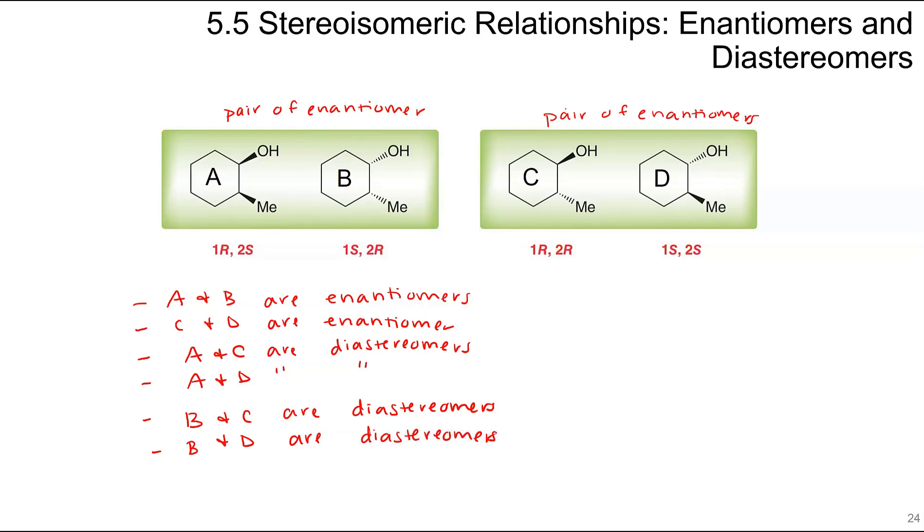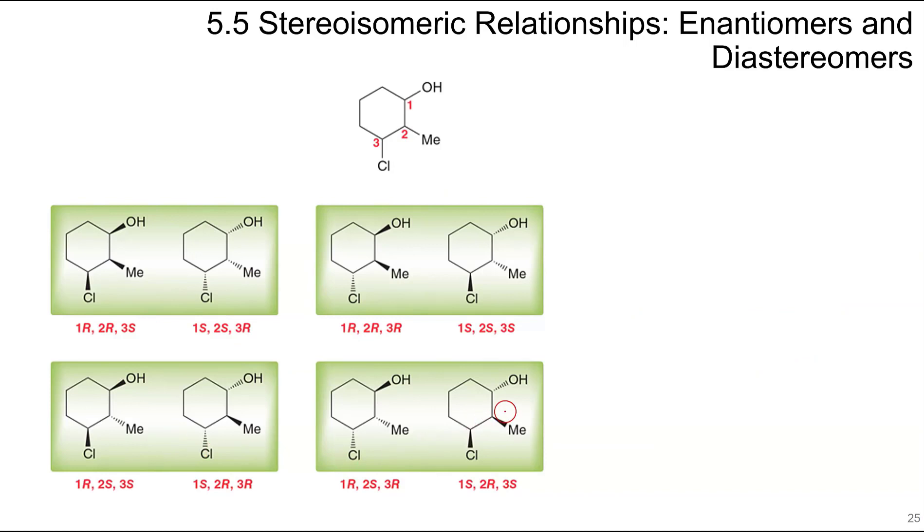For a compound with two chiral centers, we can have 2 to the N, or 2 squared equals 4 possible stereoisomers. The formula for the max number of stereoisomers is 2 to the N, where N equals the number of chiral centers. So it's 2 squared, which equals 4. These are all the combinations if you have 3 chiral centers. For 2 cubed, there are 8 possible stereoisomers.